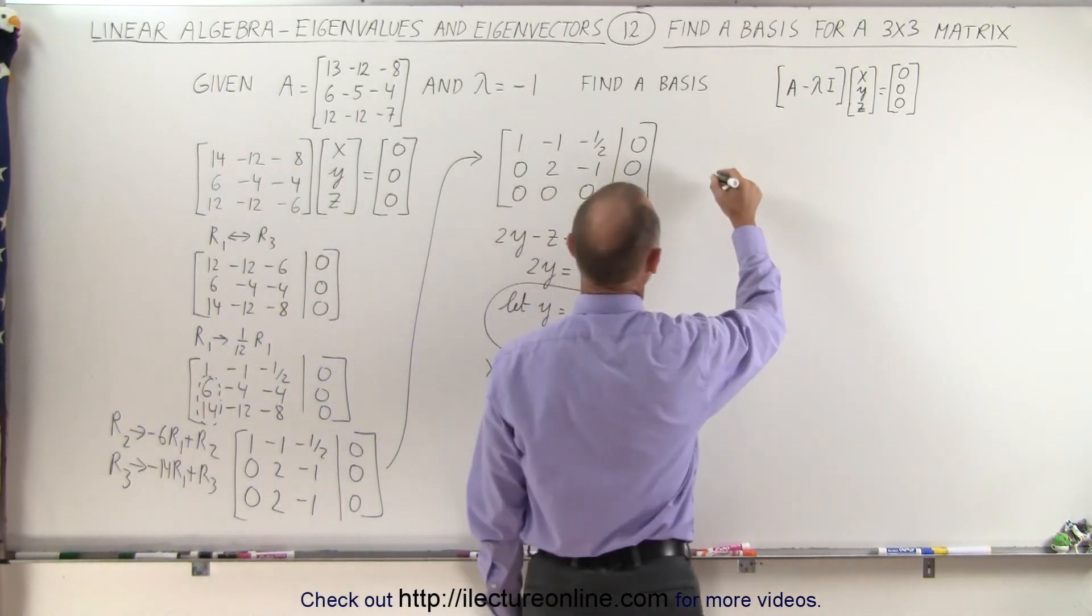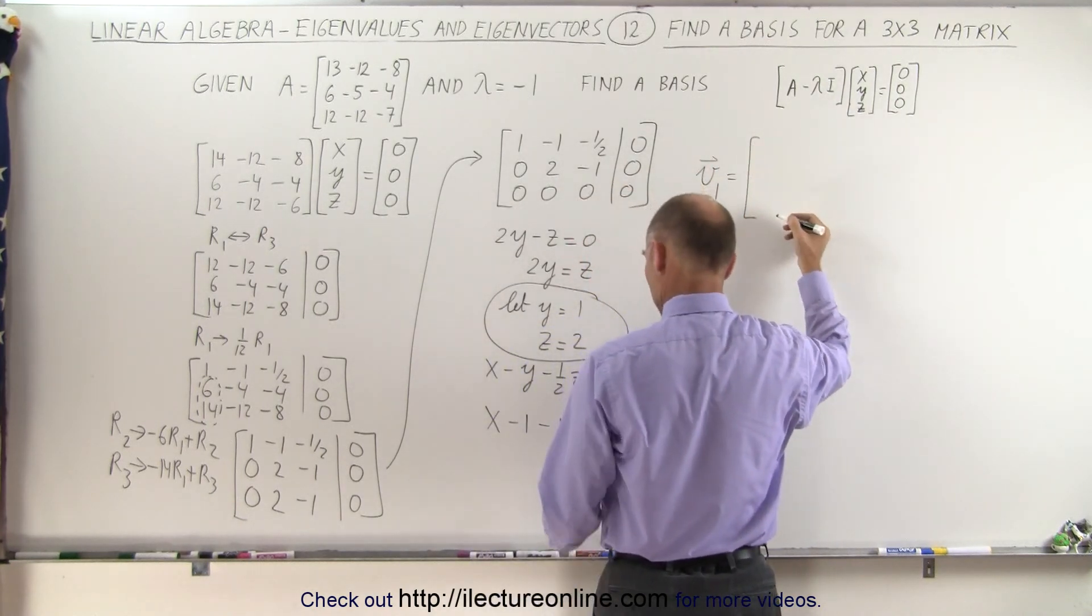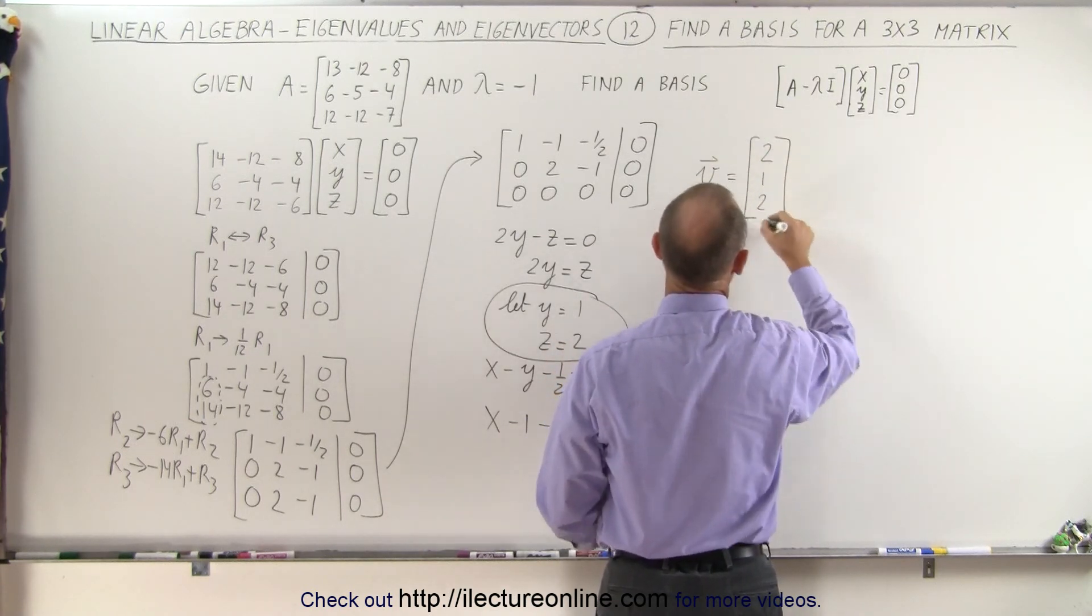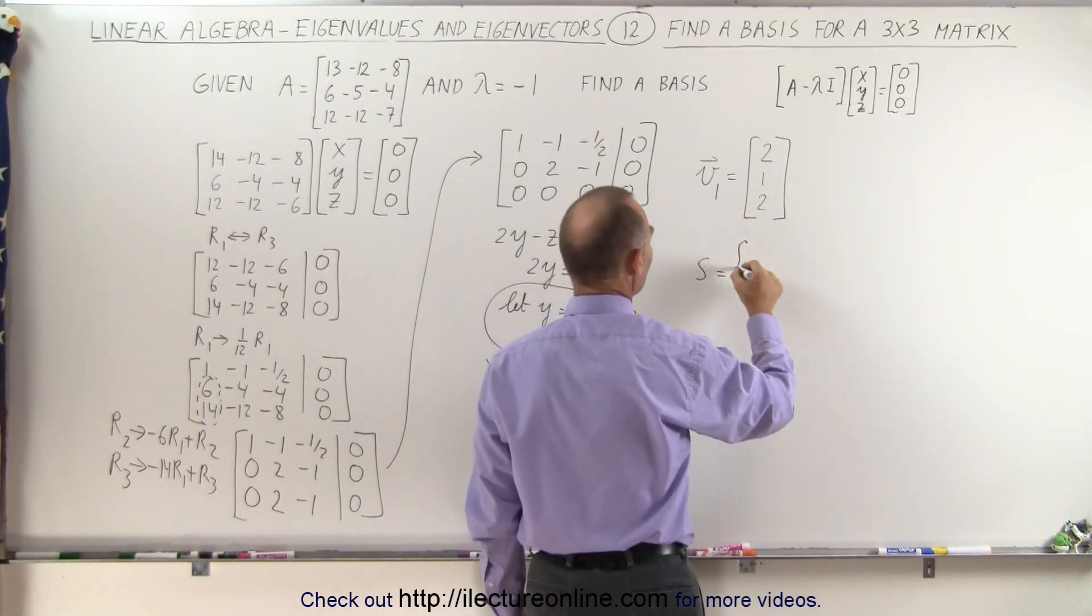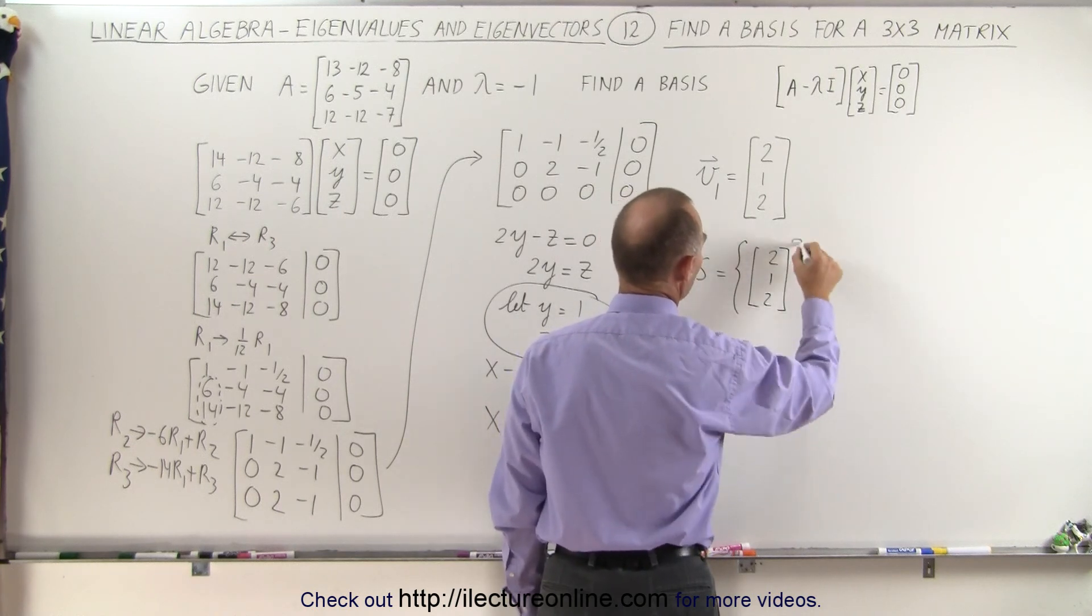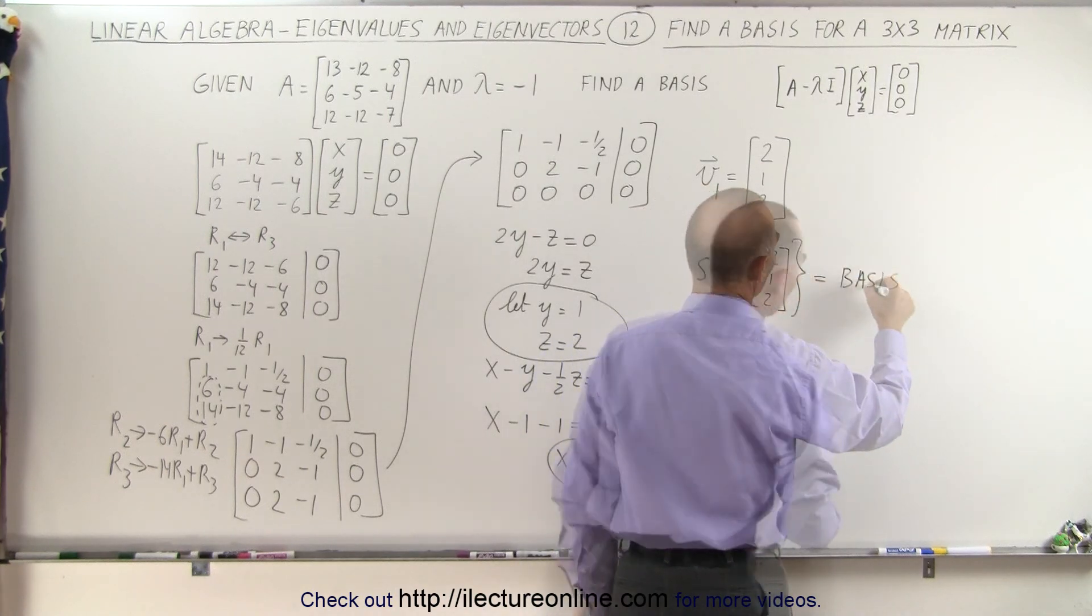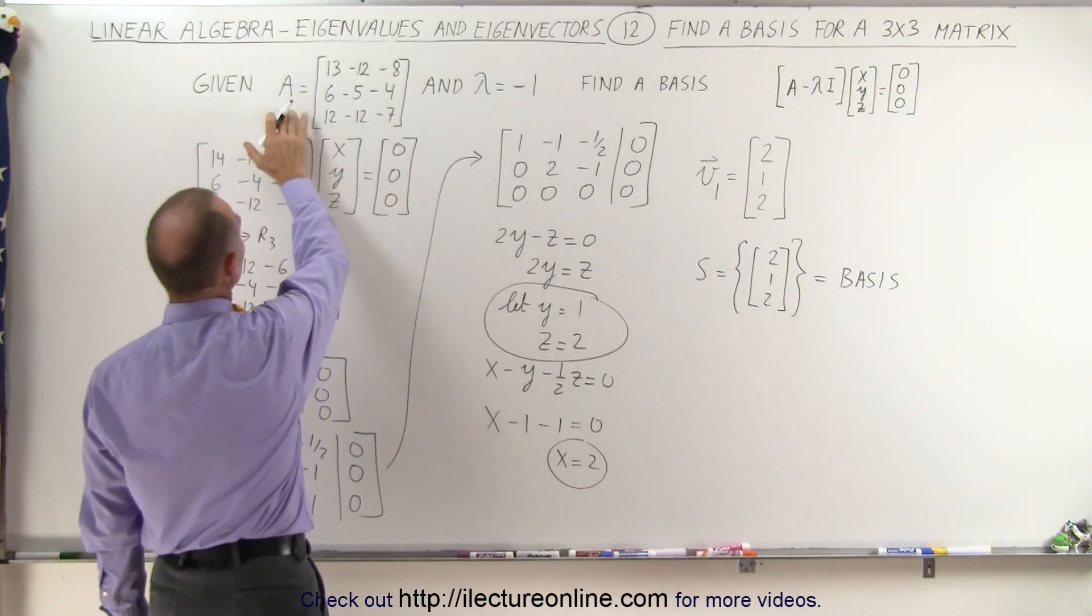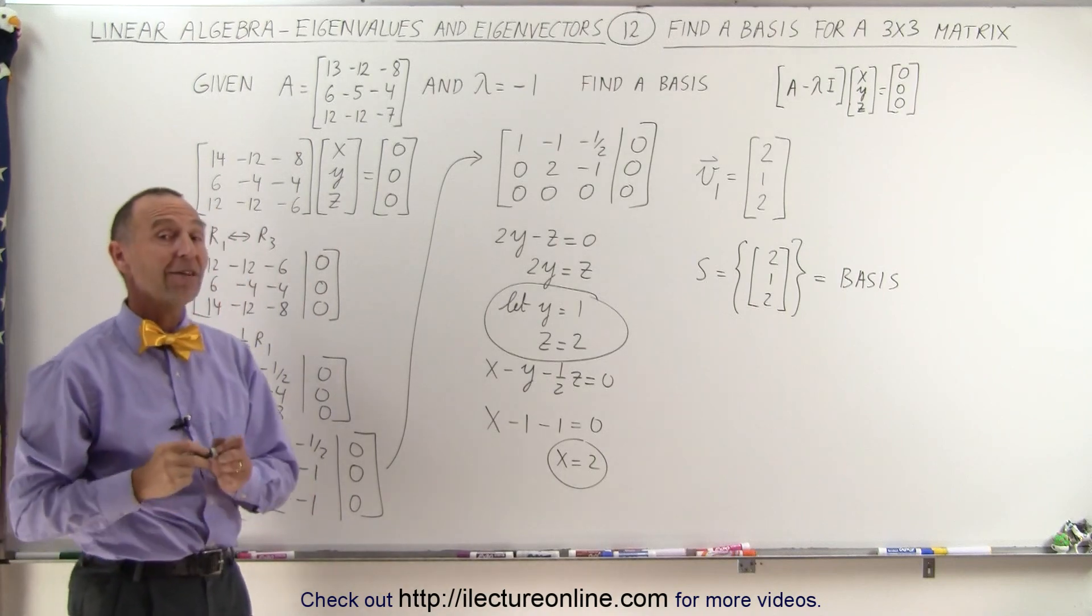I can now say that my first vector, v1, the eigenvector, is equal to, for x we get 2, for y we get 1, for z we get 2. There's my eigenvector. So the set can now be written as containing the vector 2, 1, and 2, and this forms the basis. So this is equal to the basis for the eigenspace associated with the matrix A and the eigenvalue lambda equals negative 1. And that's how that's done.